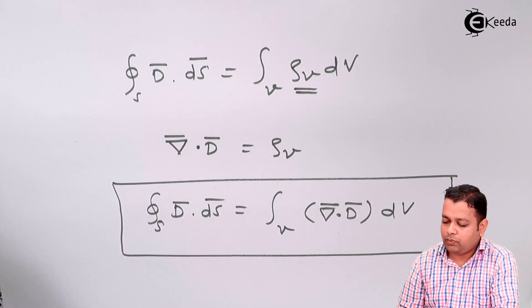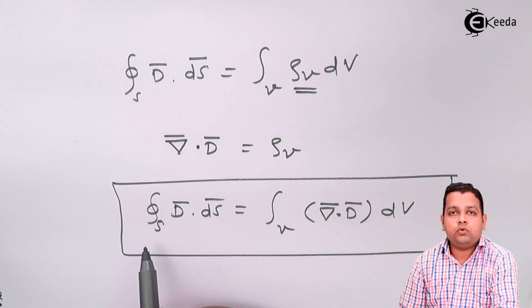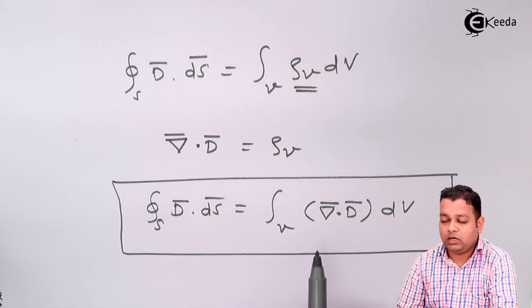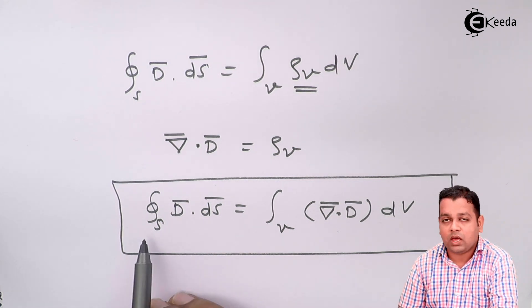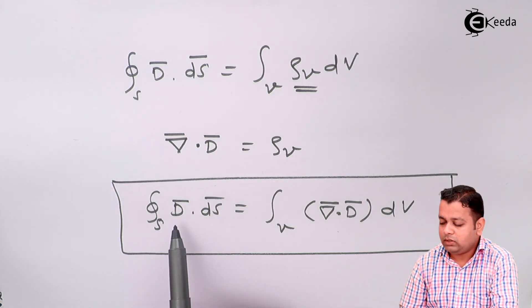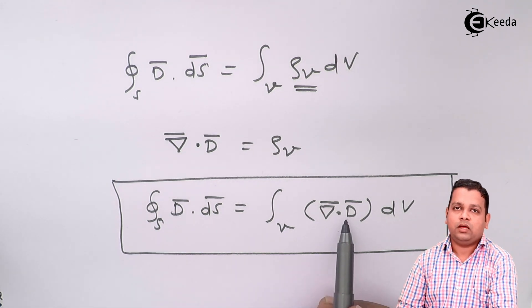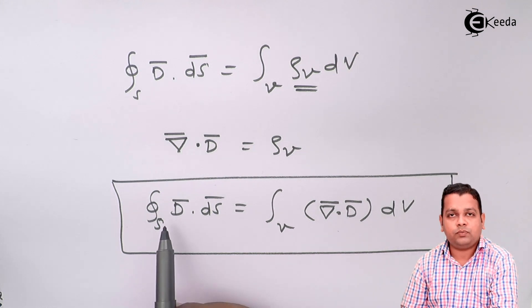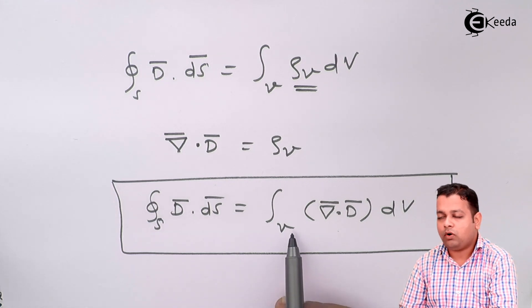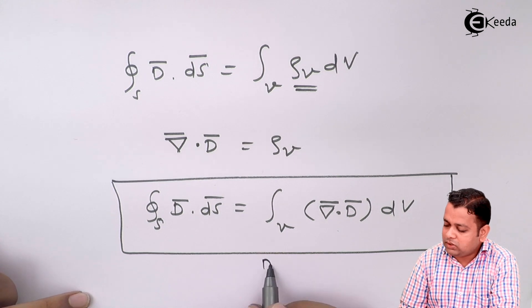Now if we focus on the left hand side and right hand side, we come to know that on left hand side we have closed surface integral, whereas on right hand side we have volume integral. Three dimensions are involved here, two dimensions are involved here. The vector operand is the same, d bar on left hand side as well as on the right hand side. So when the same vector representation we have with the help of closed surface integral and volume integral with the divergence representation, this is called as divergence theorem.